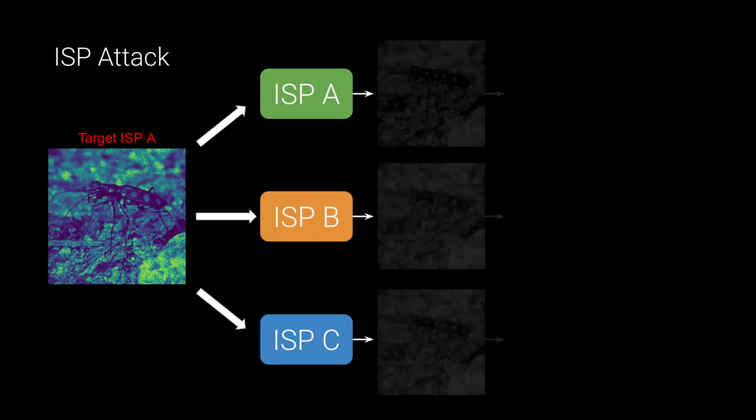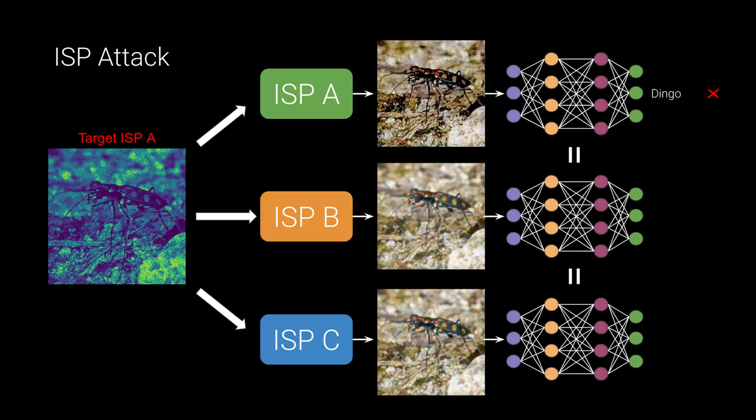We first illustrate this attack on camera ISP. In this case, we input a given raw image into multiple ISPs and attempt to deceive the pipeline that deploys ISP A without changing others' predictions.